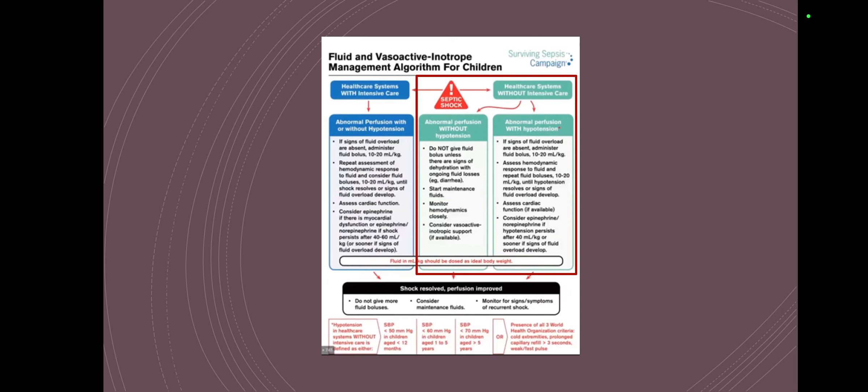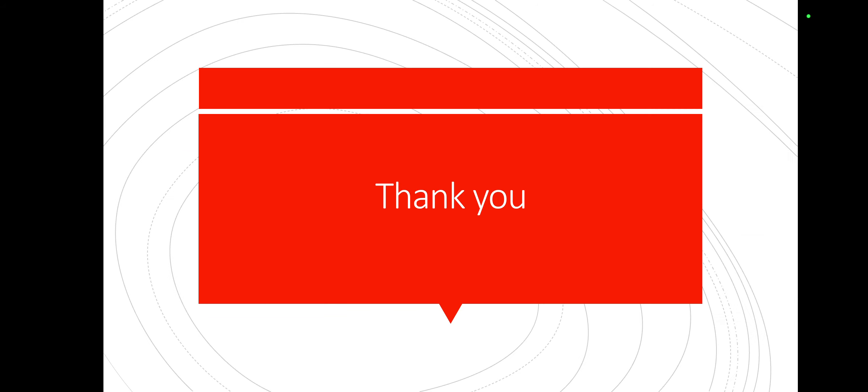The take-home message: it's difficult to diagnose sepsis, and not every child with tachycardia, tachypnea, and fever is septic — that's actually most children with a temperature above 39°C. But if you're suspicious, always think about Sepsis 6. Get your blood cultures and samples to help control the duration of antibiotics you're giving. Review the Surviving Sepsis 2020 guidance — it's easy to find online — and I'd recommend reading the evidence. Thank you very much, I hope you've had a good learning experience from this session.